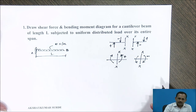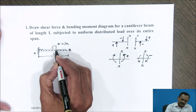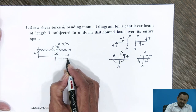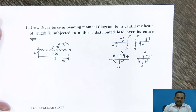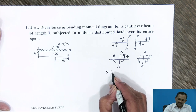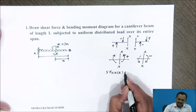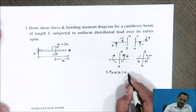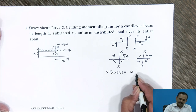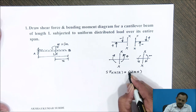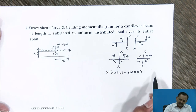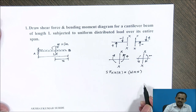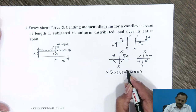We will start to solve this particular problem. First, consider the section XX normal to the axis of the beam at a distance X from end B and calculate the shear forces to the right side of the section. Shear force at section XX to its right side: shear force is the algebraic sum of forces acting to the left or right side of the section. The force acting to the right side of the section is the rate of load W spread over distance X, giving total load W into X acting in the downward direction. To the right side of the section, downward forces are considered to be positive. Therefore, the shear force is W into X.